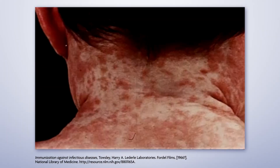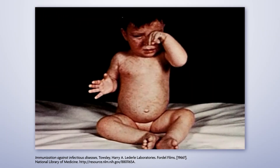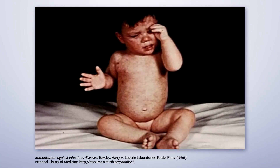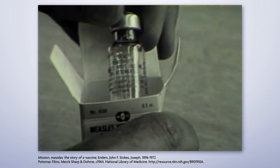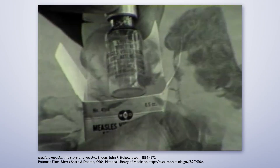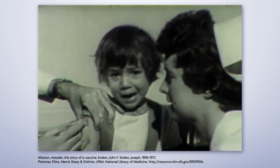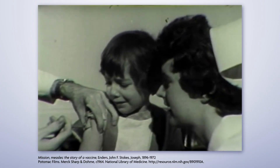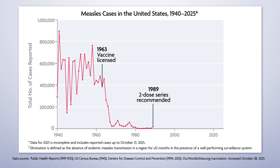Prior to 1963, almost all children had measles before the age of 15. That year, the first vaccine against measles was licensed for use and soon became part of the measles, mumps, and rubella (MMR) childhood vaccine in 1971. Then in 1989, the two-dose vaccine schedule was introduced. The resulting national vaccination efforts were highly successful, leading the United States to declare itself measles-free by the year 2000.